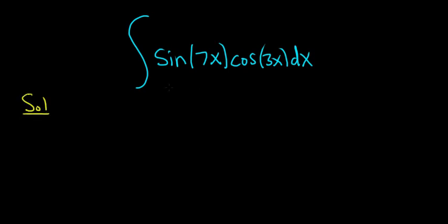So when you see a problem like this, you should think about an identity. The identity is sine of a times the cosine of b. This is equal to 1 half.